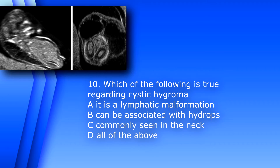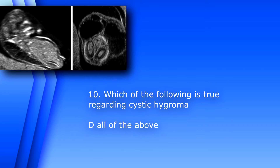Placenta completely covering the internal os would be placenta previa. Number 10. Which of the following is true regarding cystic hygroma? A. It is a lymphatic malformation. B. It can be associated with hydrops. C. Commonly seen in the neck. D. All of the above. The answer is D. All of the above.